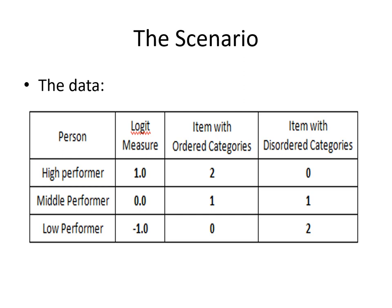On the ordered item the responses are two, one, zero. And on the disordered item the categories have been reversed: zero, one, two.